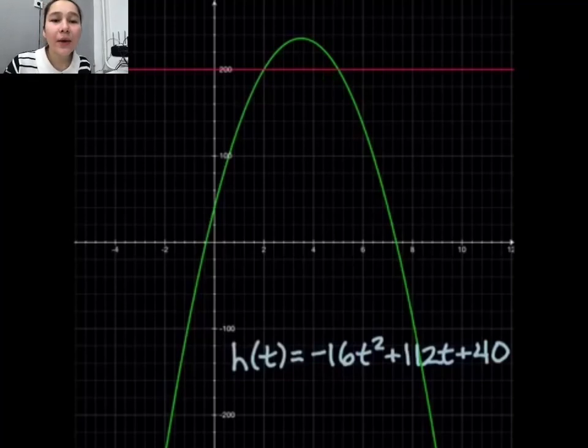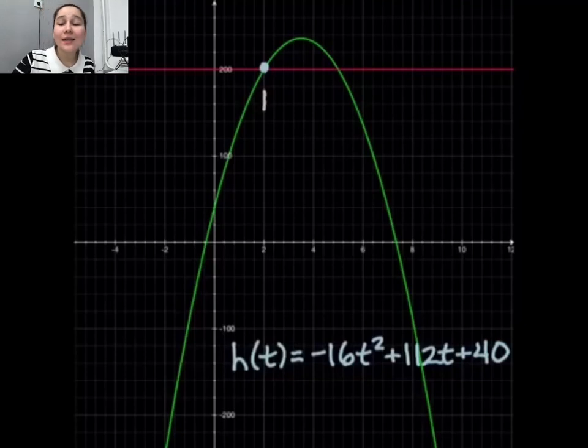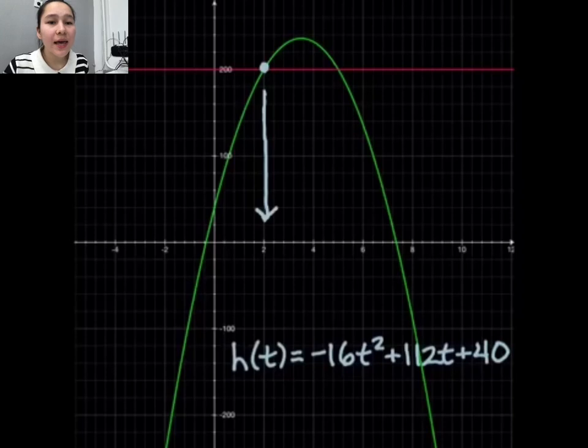The ball then continues up in the air a little bit higher until it gets to its maximum, its vertex, then it comes back down here again to 200 feet. And if you look closely, this point right here that we were looking at, the y is 200, but down here the x is at two seconds.